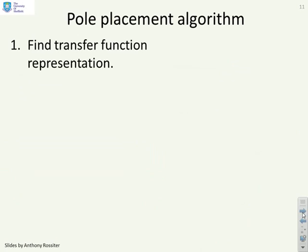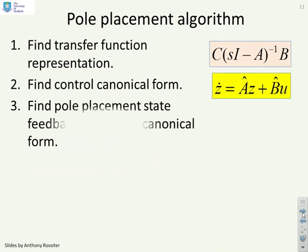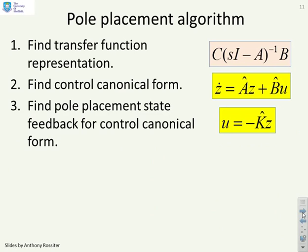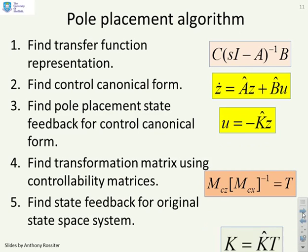Here is the algorithm. Step 1: find the transfer function using G(s) = C(sI - A)⁻¹B. Step 2: find the control canonical form matrices  and B̂ by inspection. Step 3: find a pole placement state feedback K̂ for the control canonical form. Step 4: find the transformation matrix T = Mc_z · Mc_x⁻¹. Step 5: find the state feedback for the original system using K = K̂ · T.